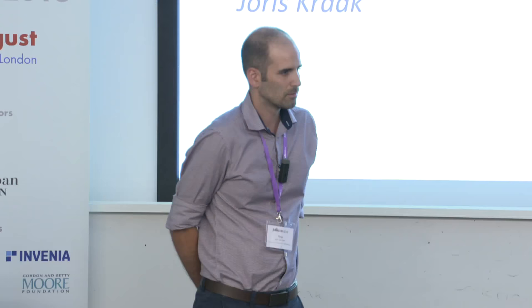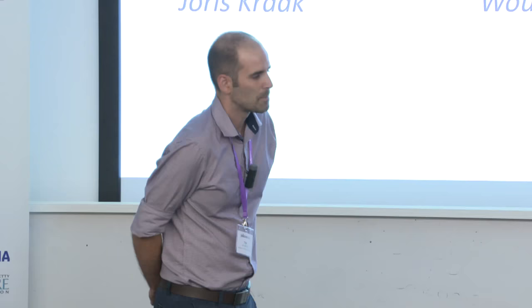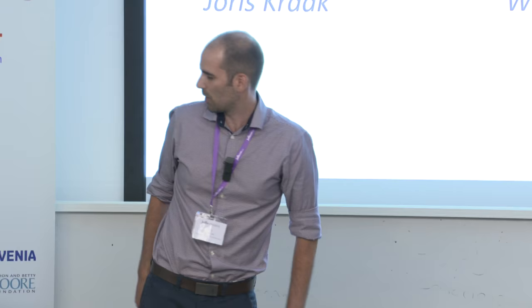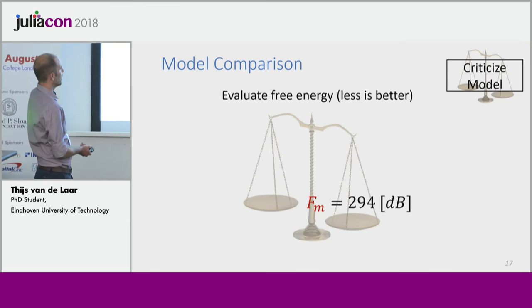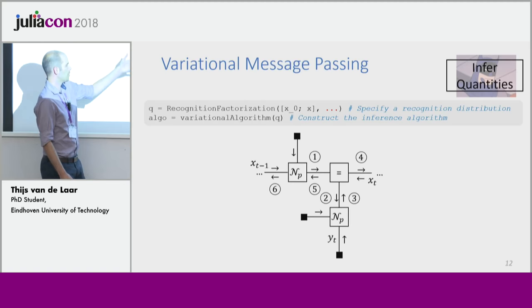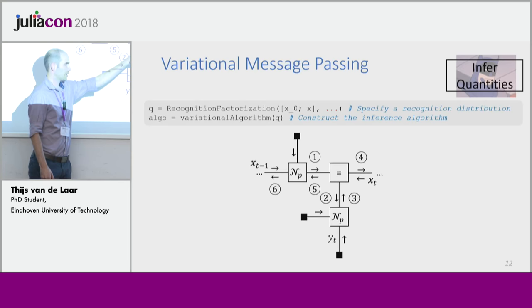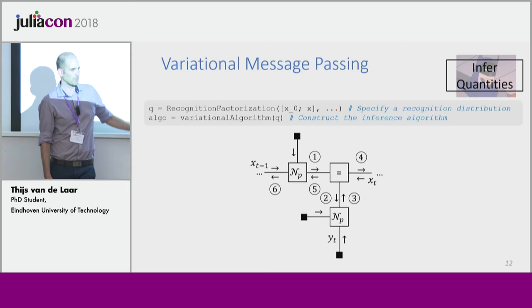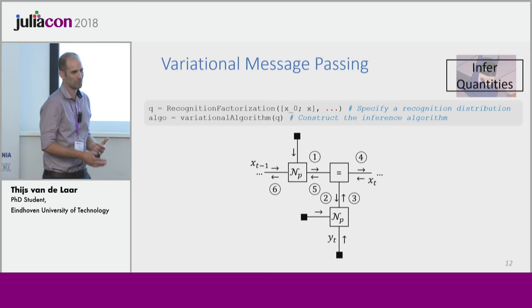Question: You showed a singly connected graph — are there any constraints on structure? Can the factor graph be multiply connected? In a Forney-style factor graph, edges always connect two nodes, which can be a constraint. But you can share variables through an equality node, which enables you to connect a variable Xt with factors connected to multiple different variables. We can discuss further if you want to know more — it's a long story to explain in detail.